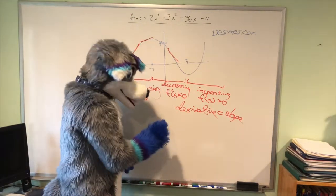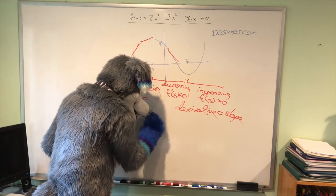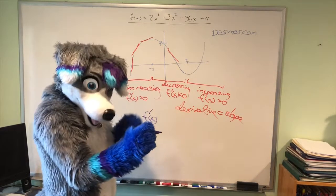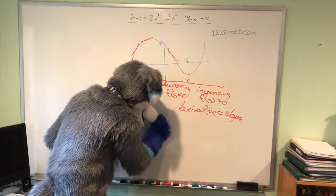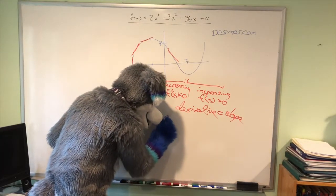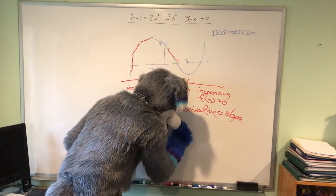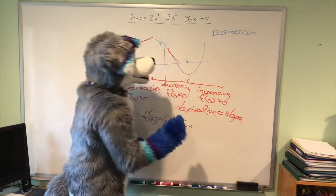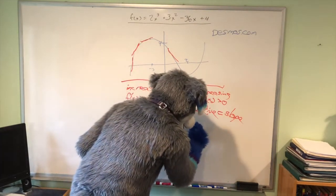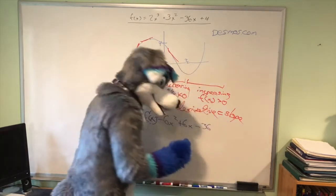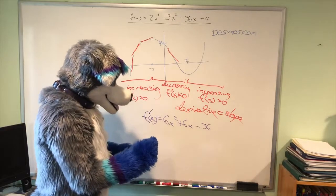Mathematically, if you did not have a graph, you could just take the derivative of your function — and again I'm assuming you know the basics of derivatives. The derivative is 6x² + 6x − 36, and you want to know where this is positive or negative.